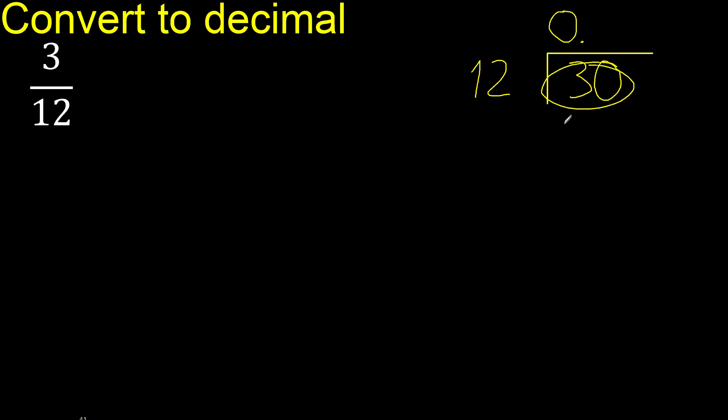Now 30 is not less than 12. 12 multiplied by what number is nearest to 30? 12 multiplied by 3 is 36, excessive. Multiplied by 2 is 24, the nearest number. Subtract to get 6. There is no number that goes down.